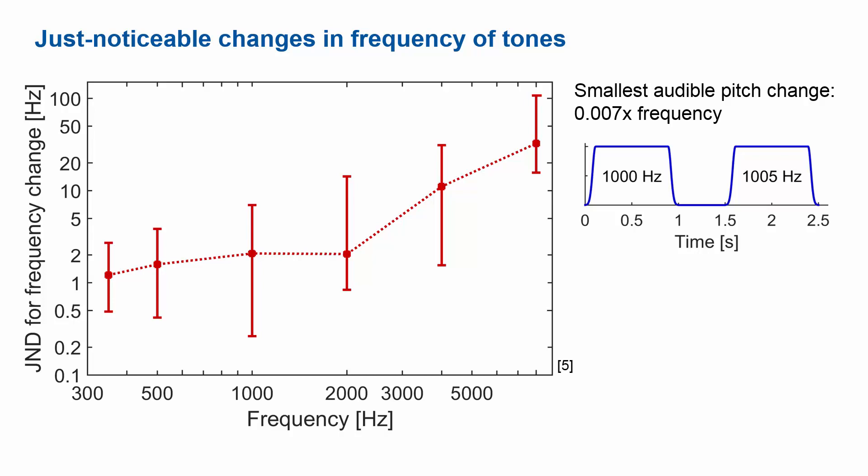We're extremely sensitive to pitch changes, which helps us a great deal in complex listening situations with multiple sounds — to hear out different sounds. It's one of the strongest segregation cues. Pitch JND increases towards higher frequencies; one of the upper limits is about 0.7% of the frequency, which is a very small fraction. For larger frequencies it increases, but still stays very small as a fraction of the center frequency.